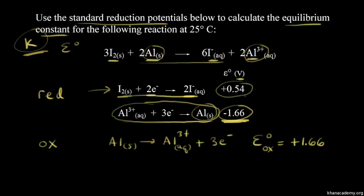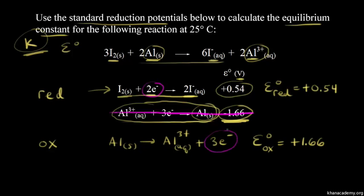For our reduction half reaction, we keep the standard reduction potential as positive 0.54 volts. Next, we need to look at our balanced equation and make the number of electrons equal for both half reactions. The reduction half reaction has two electrons, and the oxidation half reaction has three electrons. We need six electrons for both half reactions, because the electrons lost are the same electrons that are gained. So we multiply the reduction half reaction by three and the oxidation half reaction by two.